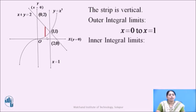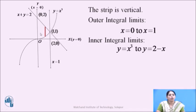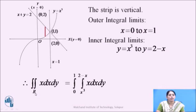Now we can find the inner integral limits. To find them, look at the ends of this strip. Its lower end is on the curve y equals x cubed and the upper end is on the straight line x plus y equals 2. As these are the limits of y, we express both limits in terms of x. So we get the inner integral limits as y equals x cubed to y equals 2 minus x. Therefore, the given integral double integral over R of x dx dy becomes the integration from 0 to 1, and from x cubed to 2 minus x, of x dy dx.